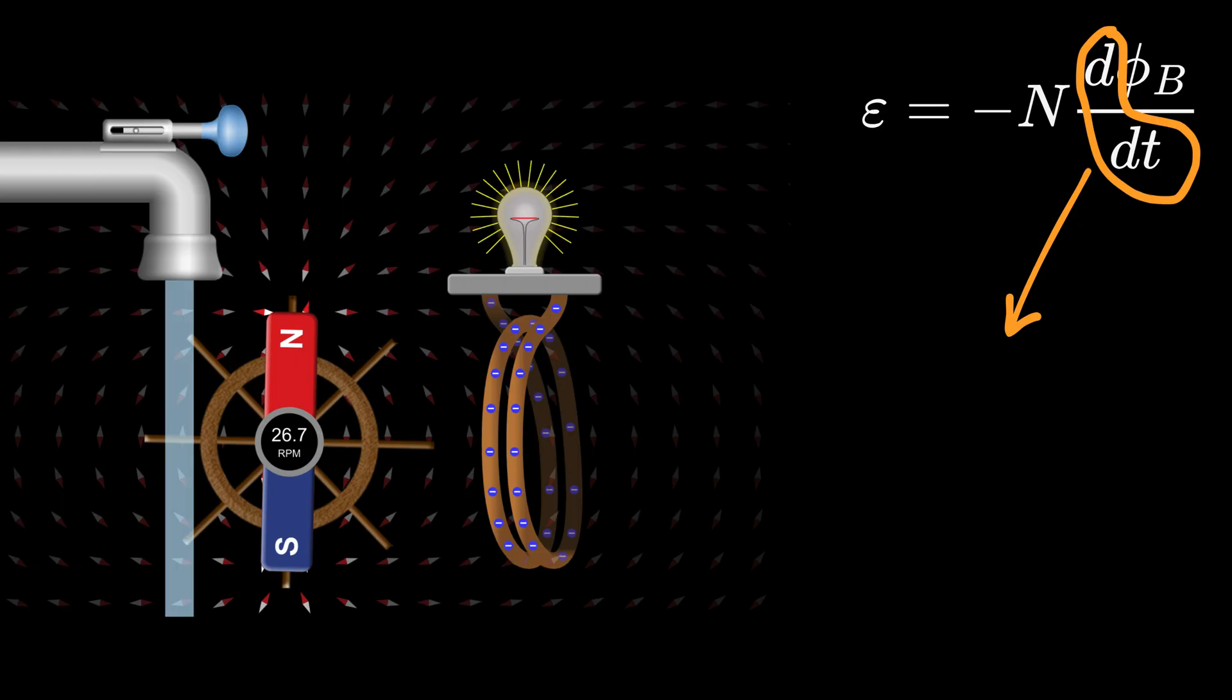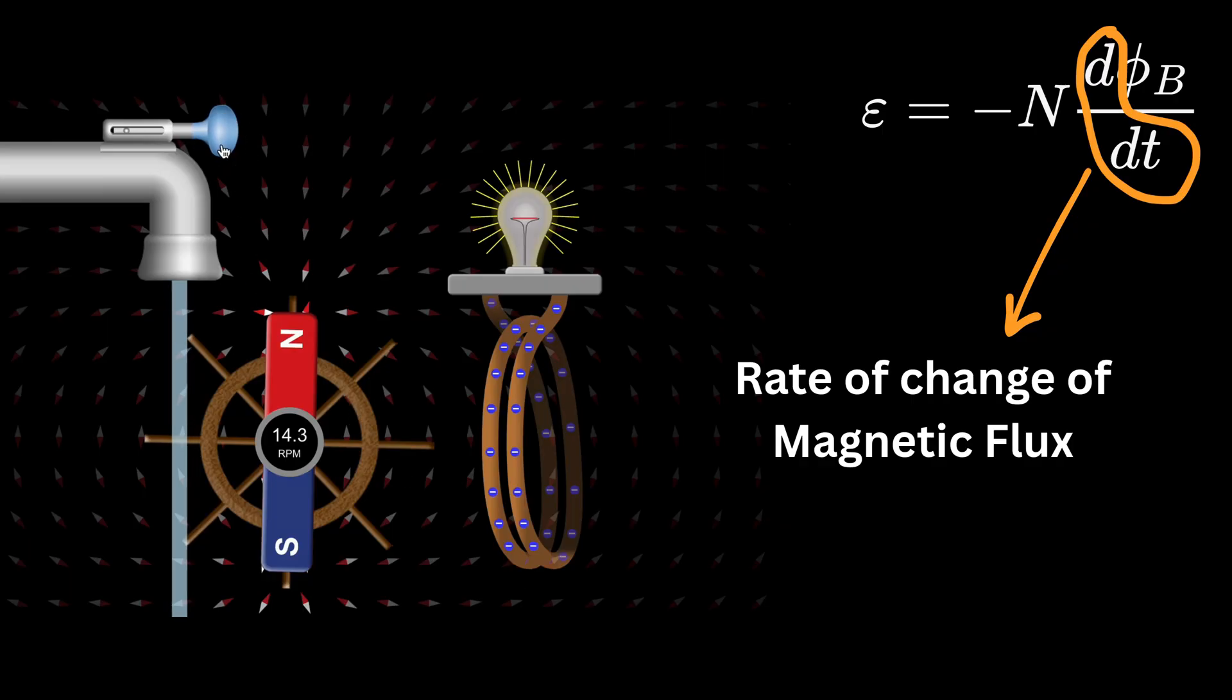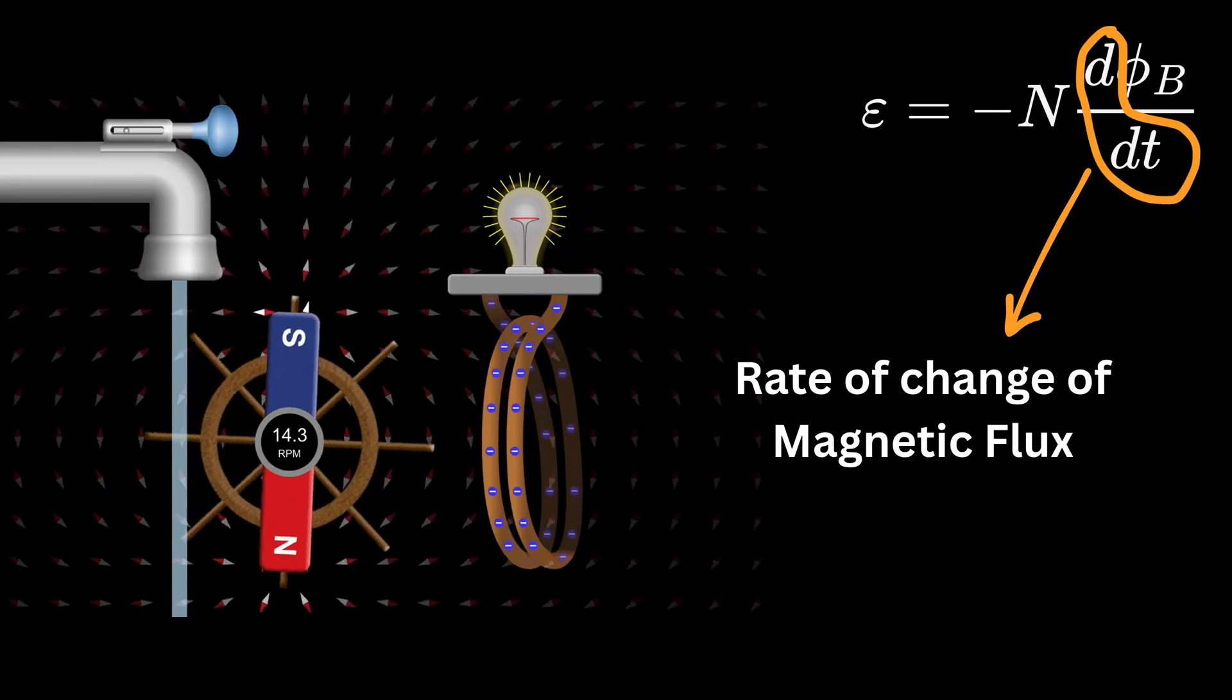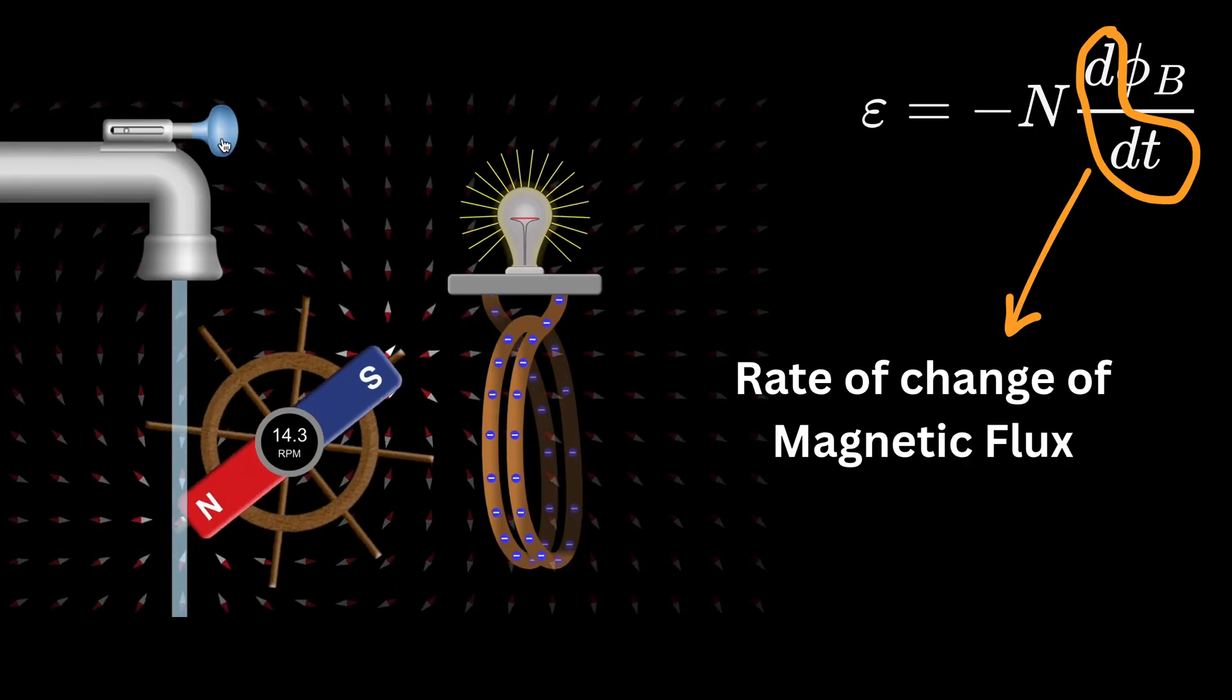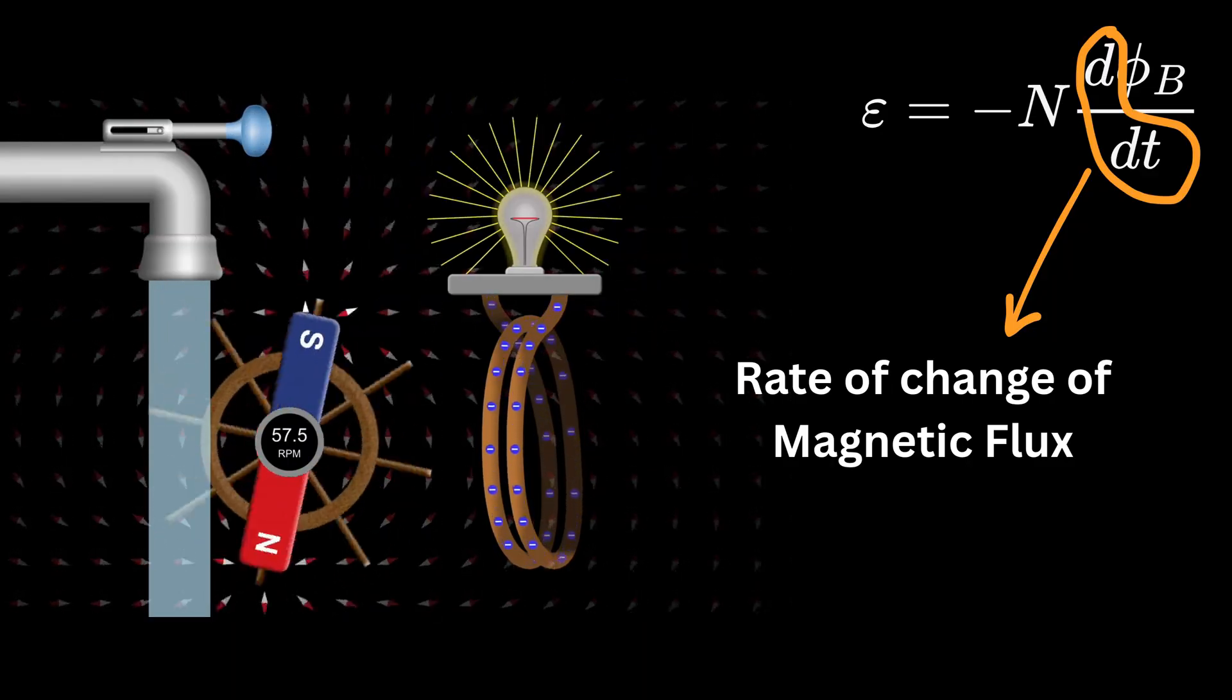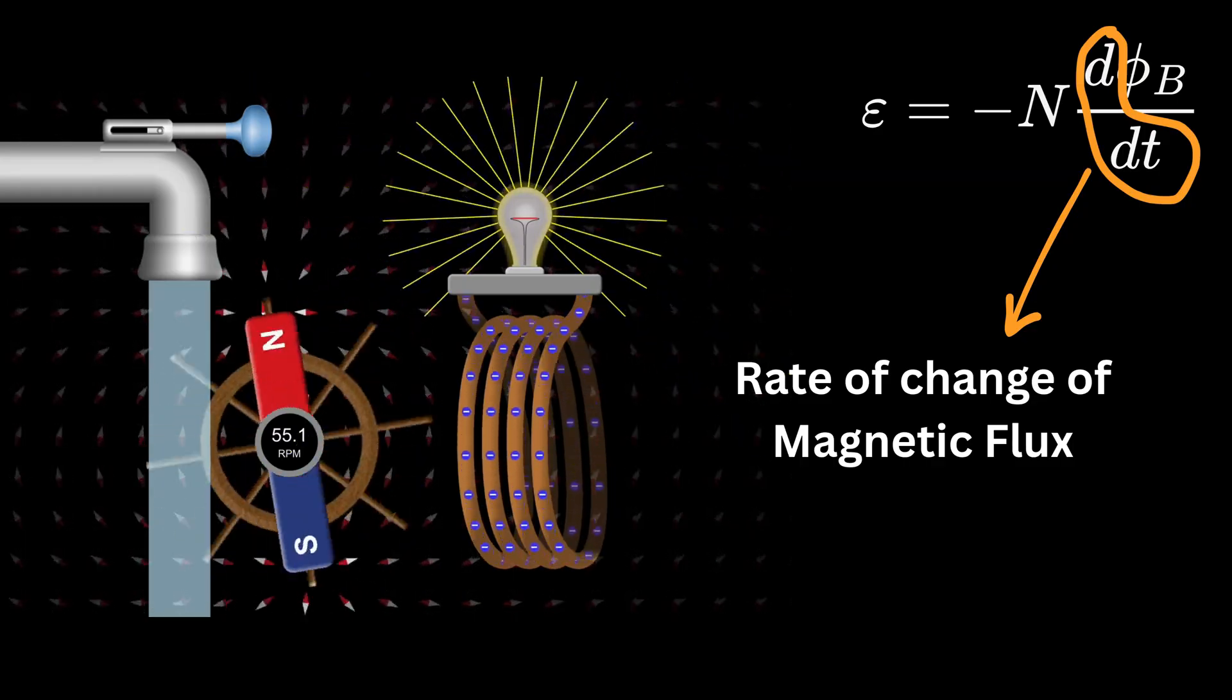And d over dt of this phi b means how fast the magnetic flux is changing with time. So if you move a magnet slowly, the change is small, so you get only a little voltage. If you move it quickly, the change is big, so you get more voltage. And if you have more loops, you multiply the effect.